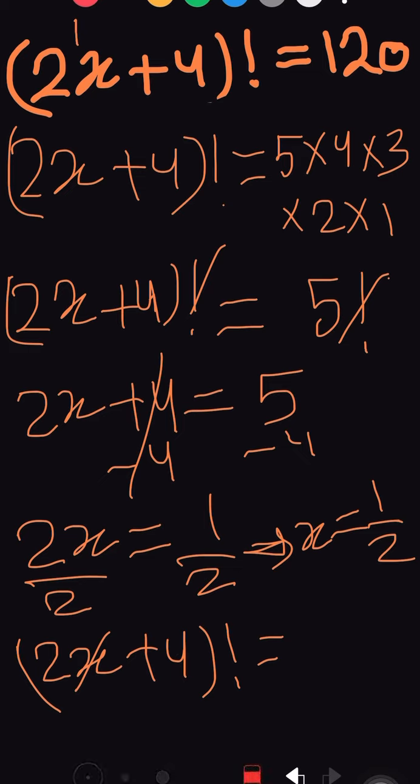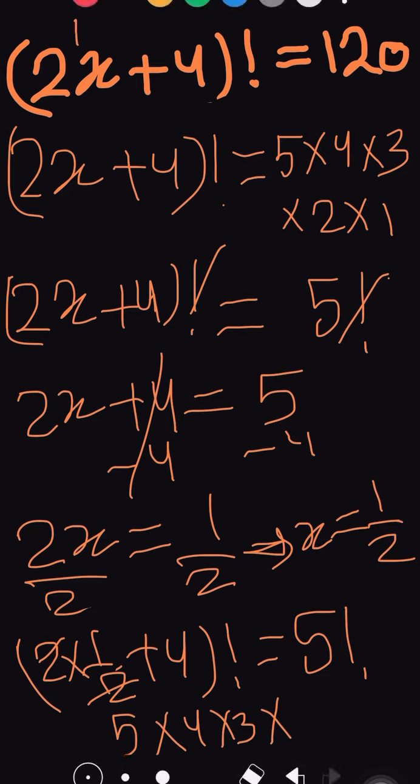2 times 1/2, the 2's cancel, giving 1 plus 4 equals 5. So 5! = 5 × 4 × 3 × 2 × 1 = 120, which equals the right side. Both sides are equal, meaning our answer is correct. Thank you so much, don't forget to subscribe and share. Have a nice day.